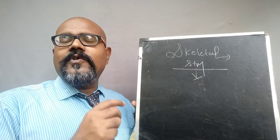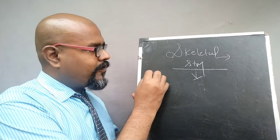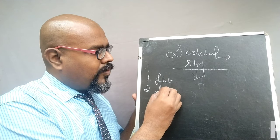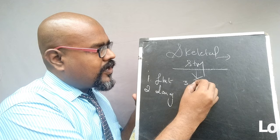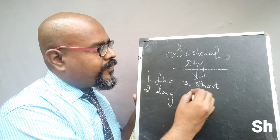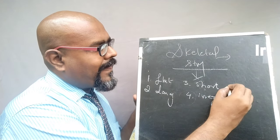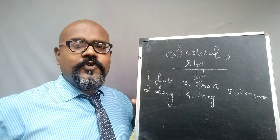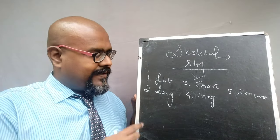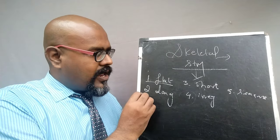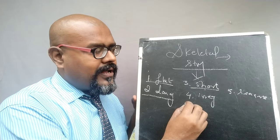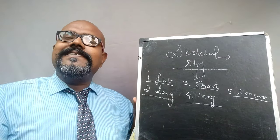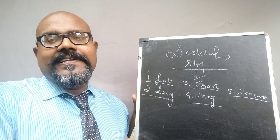According to the size of the bone, we can classify bones into five types: flat bone, long bone, short bone, irregular bone, and sesamoid bone. Please remember these names. These are all the different bone sizes available in the skeletal system.